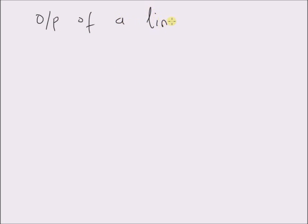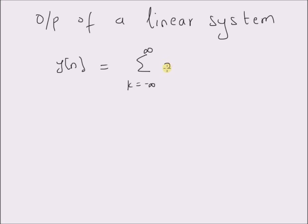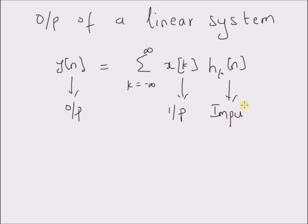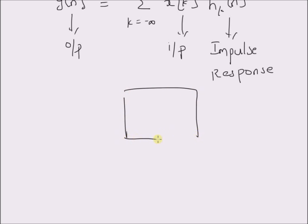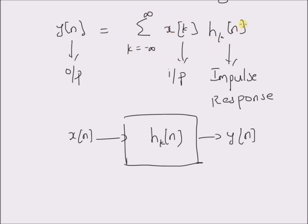The output of a linear system is defined as follows. y(n) is equal to the sum from k equal to minus infinity to plus infinity of x(k) multiplied by h_k(n). This is the output of the system, this is the input, and this is the impulse response. y(n) is basically equal to the sum of the products of the input x(n) with the impulse response h_k(n).